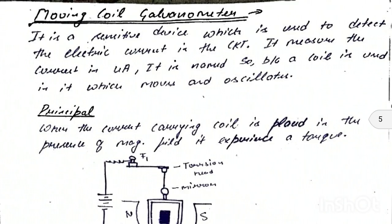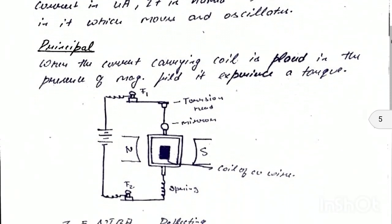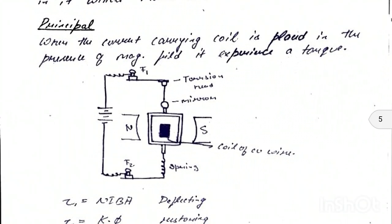A galvanometer is a sensitive device used to detect electric current in a circuit. It measures current in microamperes. It is named so because a coil is used in it which moves and oscillates. Its principle: when a current-carrying coil is placed in a magnetic field, it experiences a torque, and this torque is equal to NIBA.